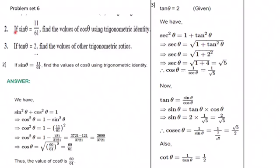Problem set 6. If sin of theta is 11 upon 61, find the value of cos theta using trigonometric identity. We know sin square theta plus cos square theta is equal to 1. So cos square theta is equal to 1 minus sin square theta. Substituting, sin theta is 11 upon 61, so sin square theta is 11 upon 61 whole squared.